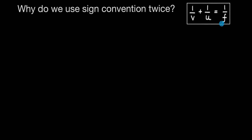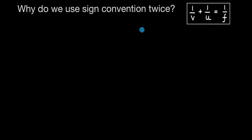We use sign convention once when we are deriving the general mirror formula and then we use it again while solving problems. In this video, we will understand why exactly we use sign convention twice. We will do that by deriving the general mirror formula for two cases — for a concave and a convex mirror — and then see why we need to apply sign convention twice: once in derivation and once while solving problems.